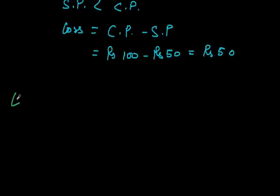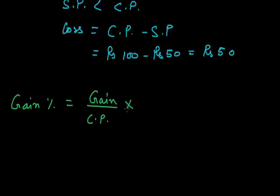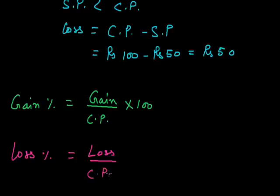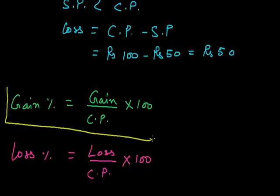Next are gain percent and loss percent. Gain percent is equal to gain upon cost price into 100. The important thing to remember is that gain and loss are always calculated on the cost price, so we always write cost price in the denominator. Loss percent is equal to loss upon cost price into 100. These are the two important formulas to calculate gain percent and loss percent.